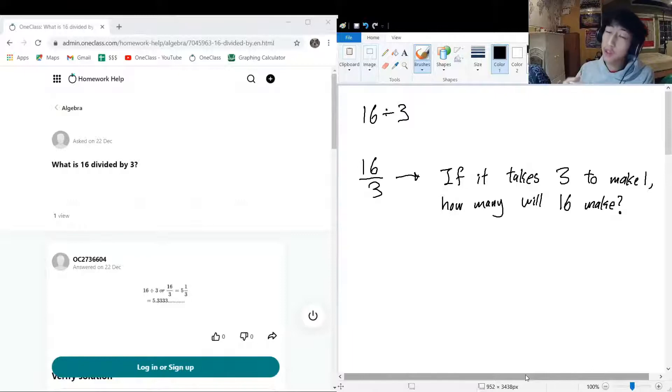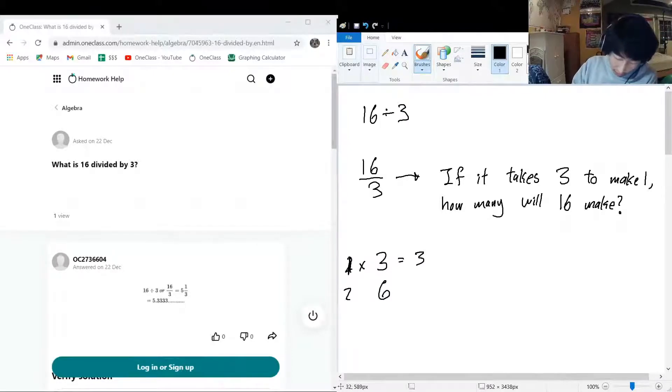How many times could we fit 3 into 16? Let's try counting this together. So we have 1 times 3 equals 3, 2 times 3 equals 6. We're getting closer. 3 times 3, we know that's going to be 9. Not quite there yet. 3 times 4 equals 12. Are we there yet? Not quite. Let's try again. 3 times 5, that's 15.